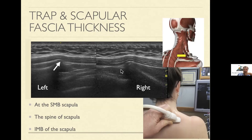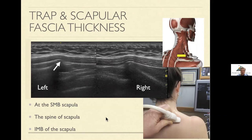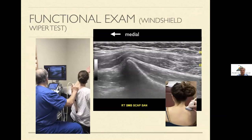Occasionally you'll see a hyperechoic signal that can represent an old tear to that area. Repeat this process at the spine of the scapula and then over the rhomboid, making these measurements. You're scanning first up high for upper trap fibers, at the spine of the scapula for middle trap fibers, and then down here for lower trap fibers, looking for atrophy of those tissue planes.